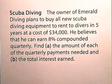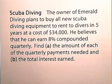Now let's do a problem involving a sinking fund. The owner of Emerald Diving plans to buy all new scuba diving equipment to rent to divers in 5 years at a cost of $34,000. He believes that he can earn 8% compounded quarterly. Find A, the amount of each of the quarterly payments needed, and B, the total interest earned.